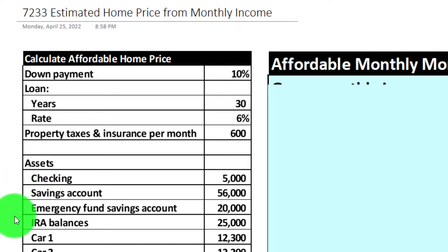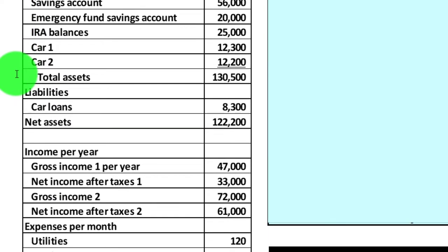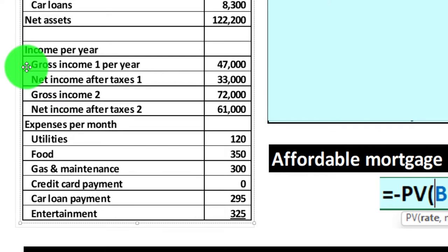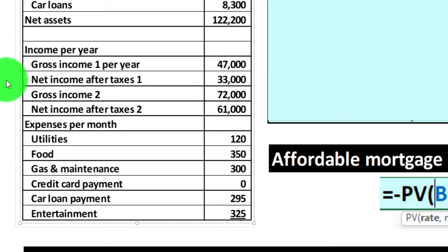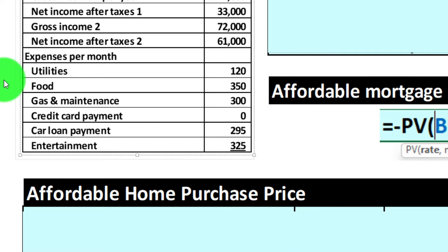We've got our financial information: the personal budgeting assets including checking account, savings, emergency fund, IRA, car one, car two, total assets, liabilities, car loans, and net assets. We have our personal income statement with gross income — assuming two income sources per year — and then the net income. This gets a little tricky with multiple income sources and withholdings that skew the calculation.